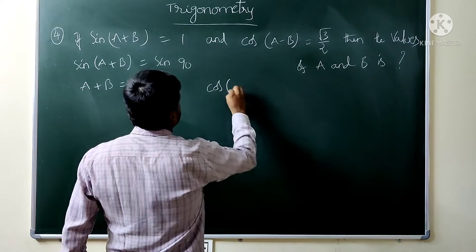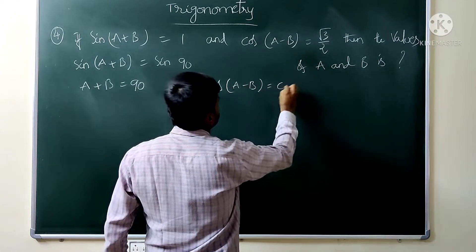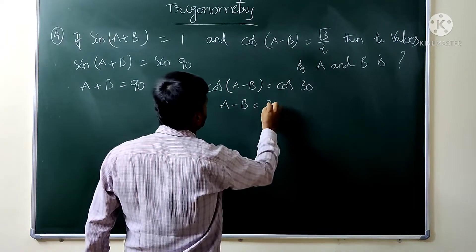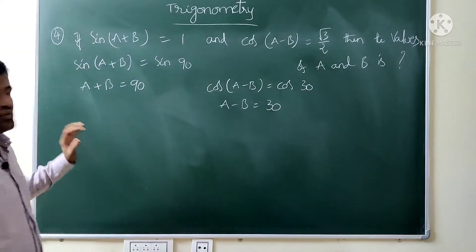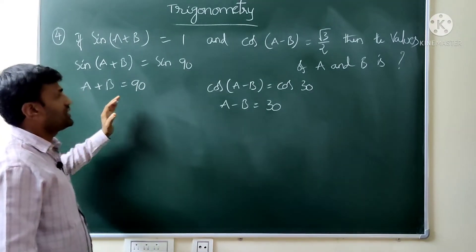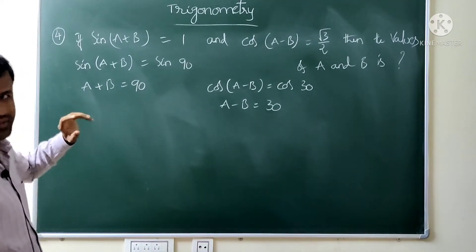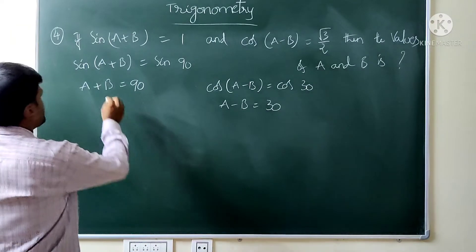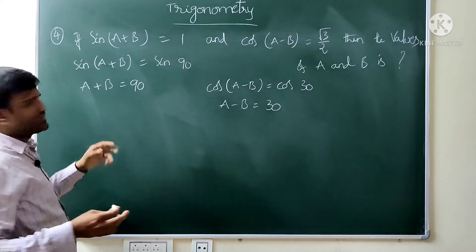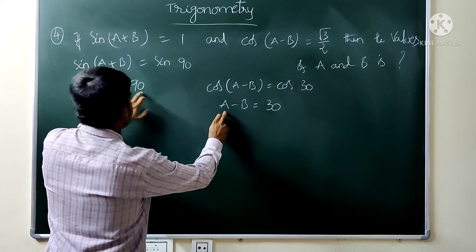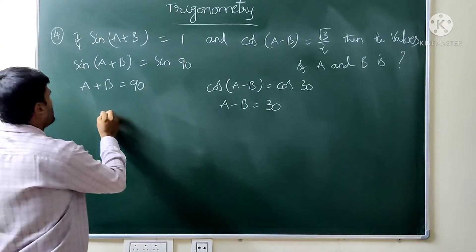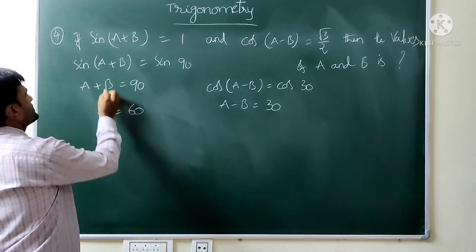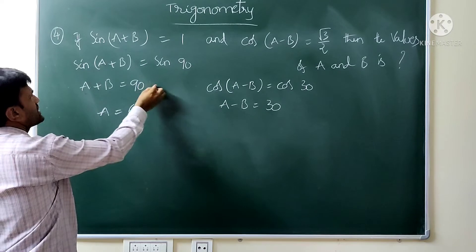Cos(A − B) = √3/2 means cos 30, so A − B = 30. Then A + B = 90 and A − B = 30. Adding: 2A = 120, so A = 60. Subtracting: 2B = 60, so B = 30.